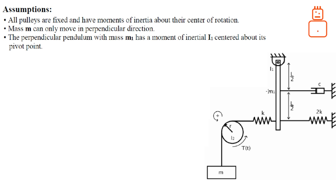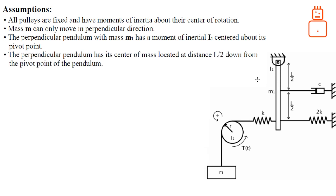The pendulum has a mass of m1 and moment of inertia I1. This moment of inertia I1 is about the pivot point — not about the center, which is important. It is also homogeneous, so its center of mass and centroid are on the same point, which is in the middle of the pendulum.